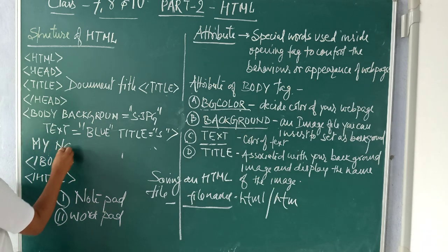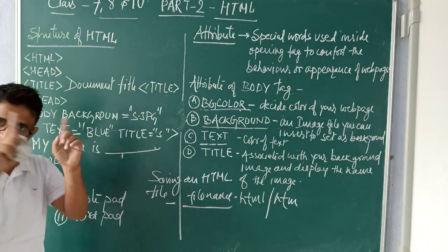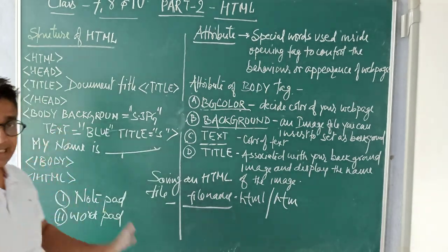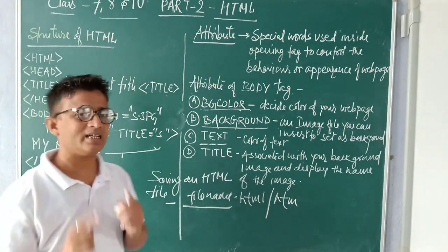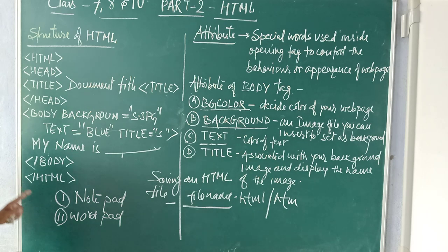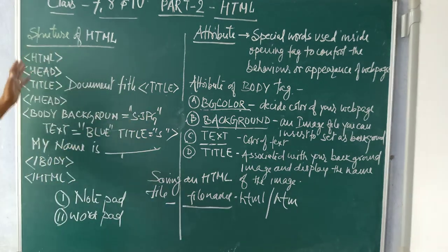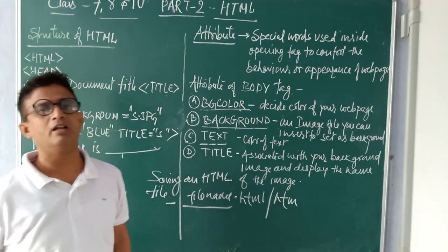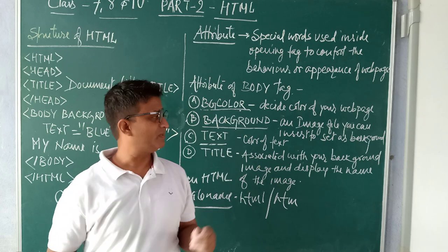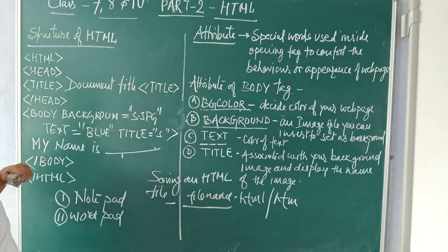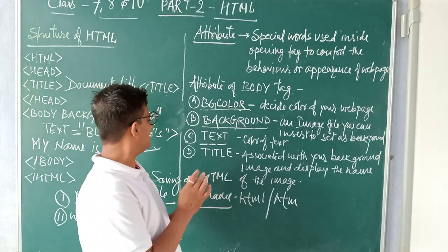Write your content like 'My name is...' — whatever you put. The display will show the background image, your text color will be blue, and hovering over the image will show the image name as a tooltip. This is the way you can create your first web page. Whoever has a laptop, desktop, or mobile at home can try this example and create their own web page. In the next part I will come with part 3 of HTML — more attributes of the body tag, how to create tables, and other things.